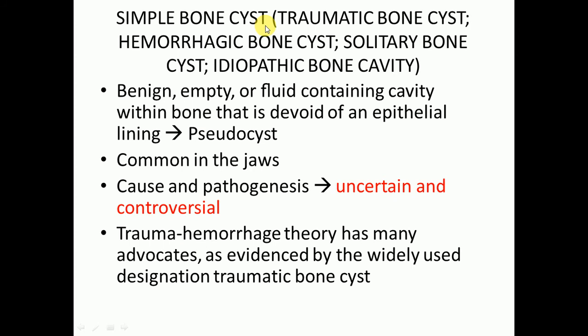Simple bone cysts are also known as hemorrhagic bone cysts, solitary bone cysts, and idiopathic bone cavity. It is a benign, empty or fluid-containing cavity within bone that is devoid of an epithelial lining, and that is why it is known as a pseudocyst. True cysts have an epithelial lining, but this lesion does not, hence the term pseudocyst.